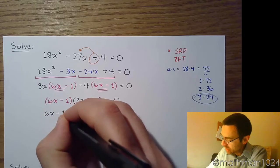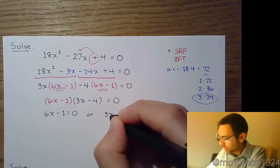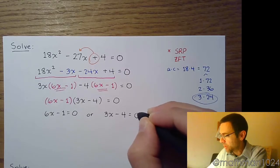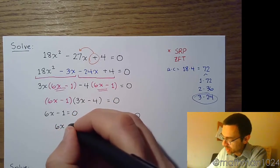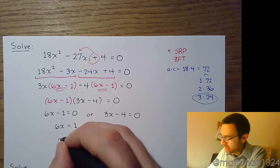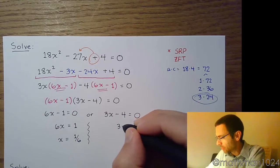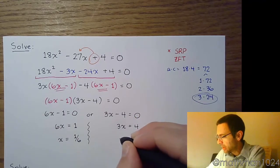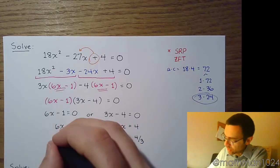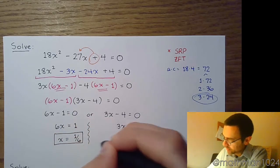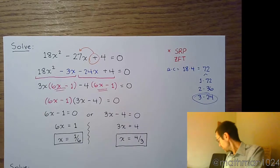Using that zero factor theorem, 6x minus 1 is equal to 0, or 3x minus 4 is equal to 0. 6x equals 1, so x is equal to 1 over 6. Move the 4 to the other side and divide both sides by 3. So x is equal to 1 over 6 or x is equal to 4 over 3.